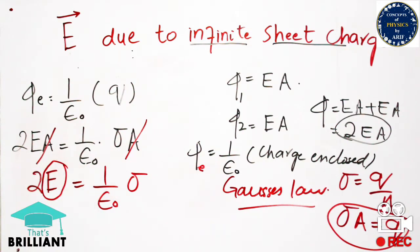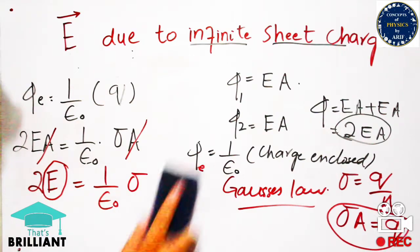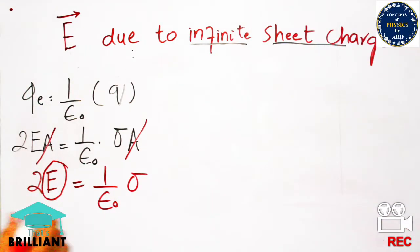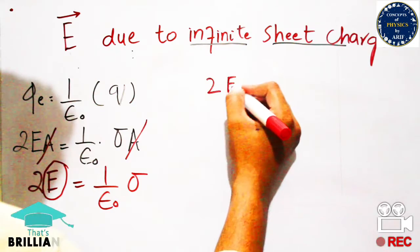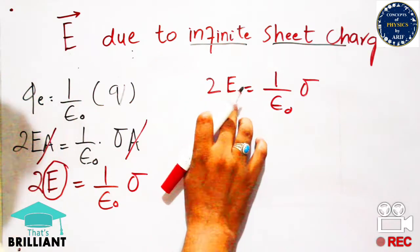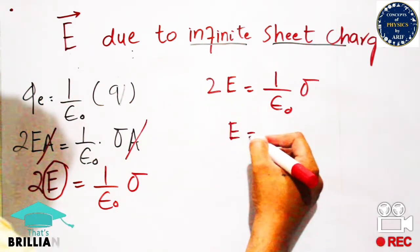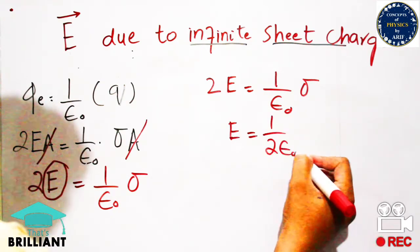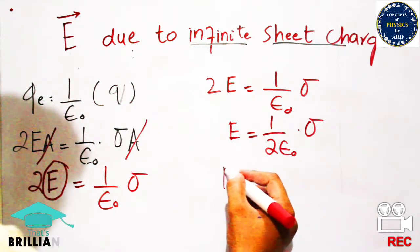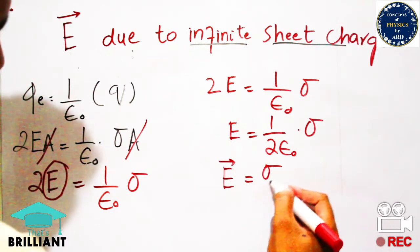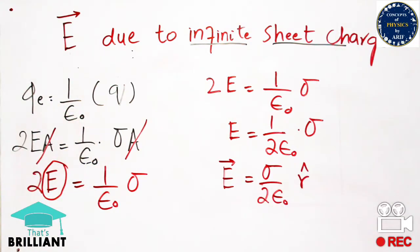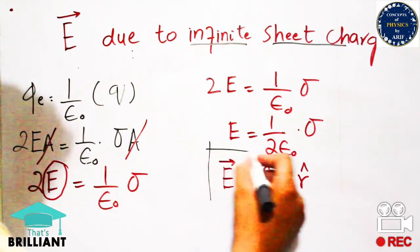Our purpose is to calculate the electric field intensity E. Moving the factor of 2 to the right side, E equals sigma over 2 times epsilon-naught. This is the magnitude of the electric field. Since electric field intensity is a vector quantity with direction, the final expression is E equals sigma over 2 epsilon-naught, times r-hat, where r-hat is the unit vector denoting the direction of the electric field lines.